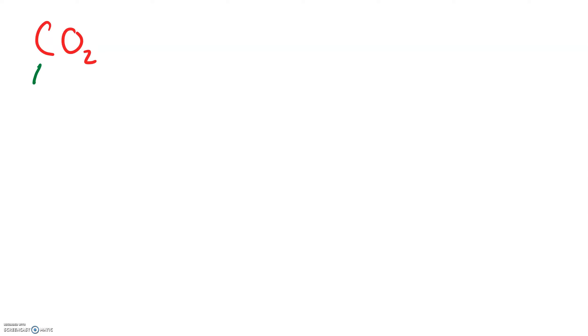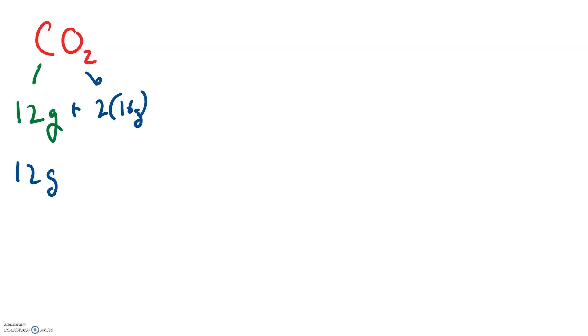Let's find the molar mass of carbon dioxide. You can look values up on your periodic table. Carbon has a molar mass of 12 grams, rounding to the nearest whole number. Oxygen has a molar mass of 16 grams, and there are two of them. So 12 grams from carbon plus 2 times 16 is 32 — the molar mass of carbon dioxide is 44 grams.